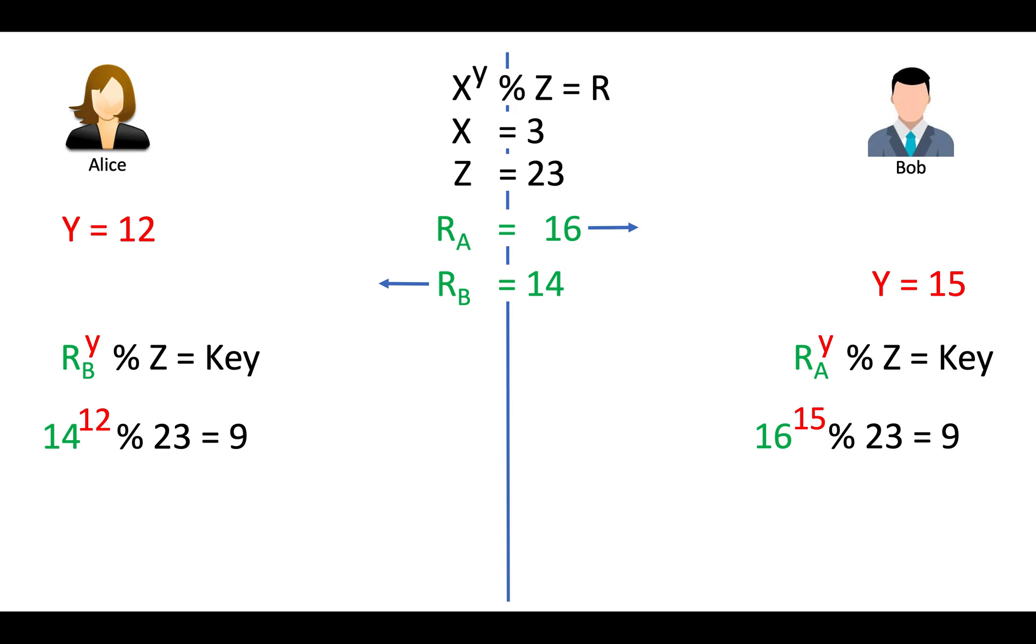If someone on network captures all information exchanged between Alice and Bob, then also he cannot derive same key. Of course, in actual, the formula is more complex and values are 2000 bit to 4000 bit long. So it is extremely difficult to brute force. I hope you understand this formula and key exchange method.